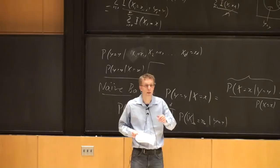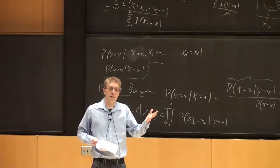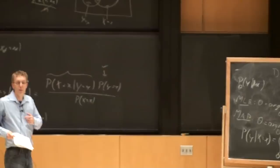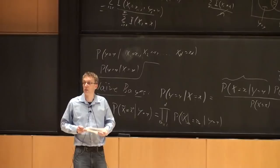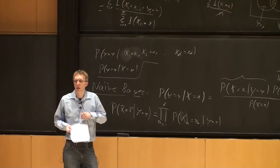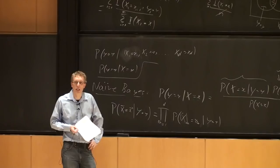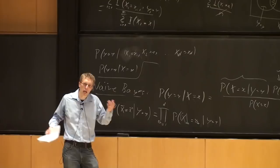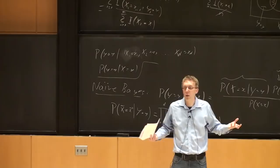Why are the features independent? They're not — this assumption makes no sense. But if we make this assumption, we can solve it. Sometimes you have to cut corners, and this is a huge corner. Your emails are hopefully not made of independent words. But it turns out empirically this often works fairly well. In many data scenarios, making this assumption trades off model accuracy but makes things computationally tractable, and it doesn't break things too badly.